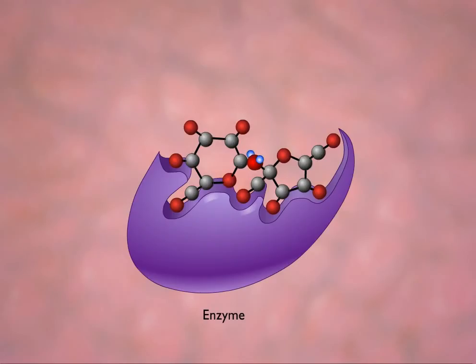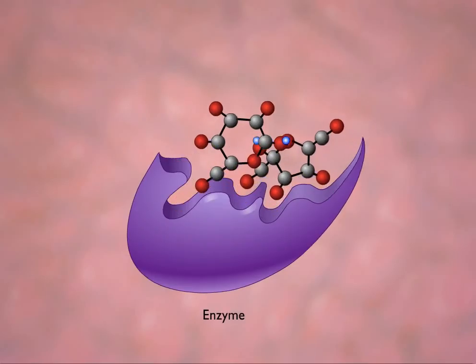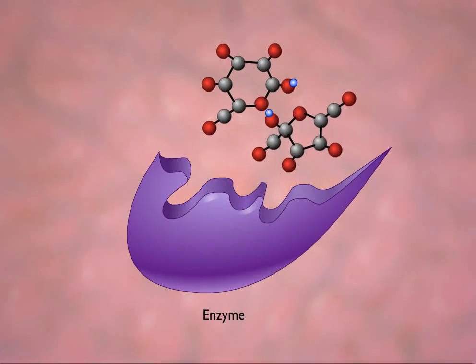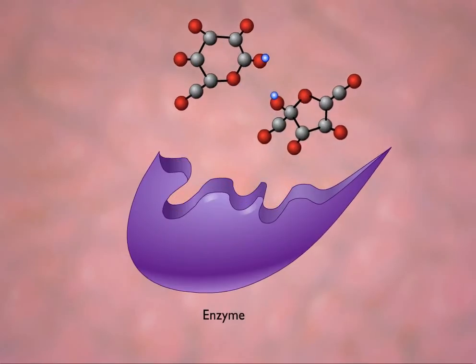This effectively cleaves the bond between the two monosaccharides and converts the disaccharide into two separate sugars. Once this is accomplished, the enzyme's configuration is changed back to the original shape.